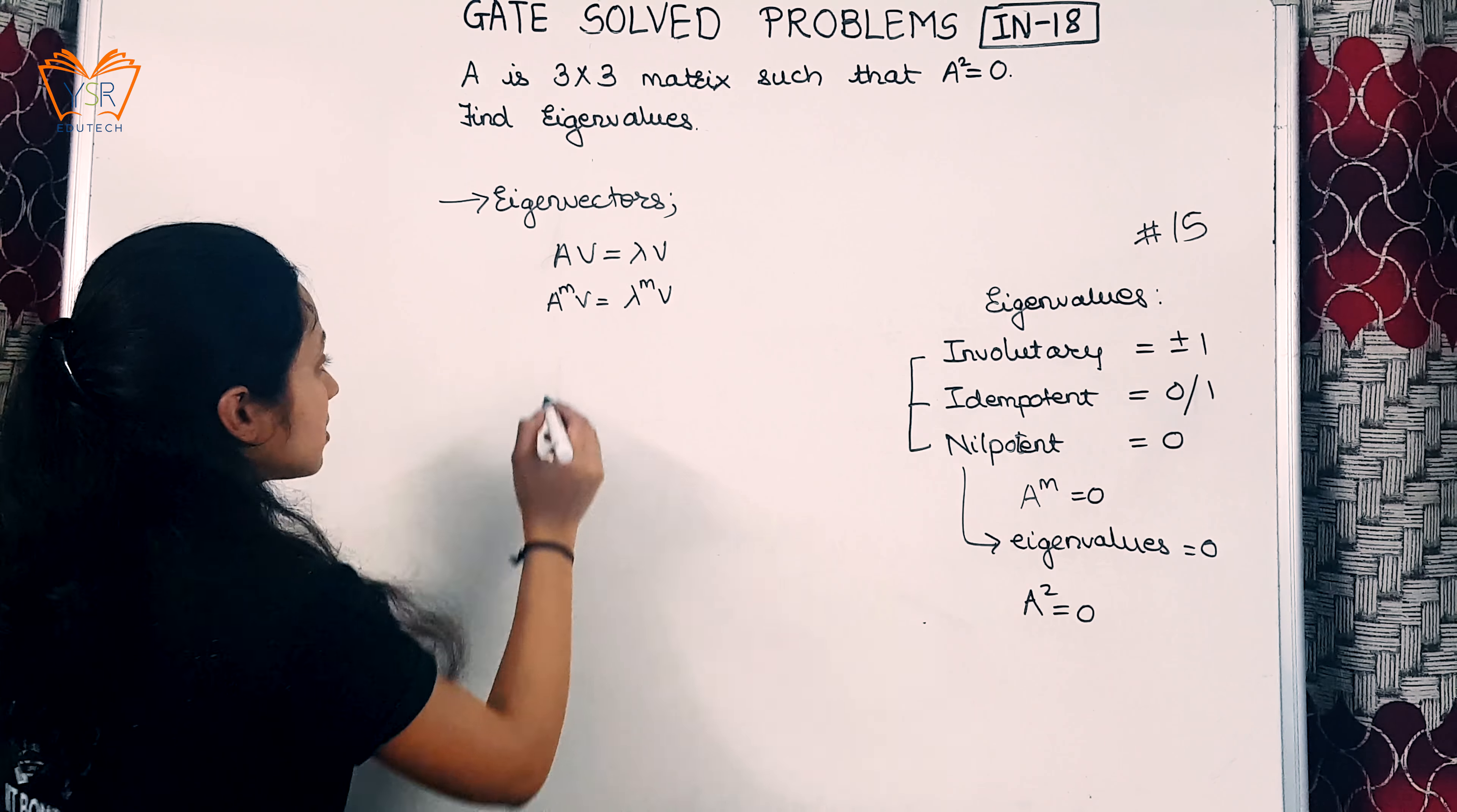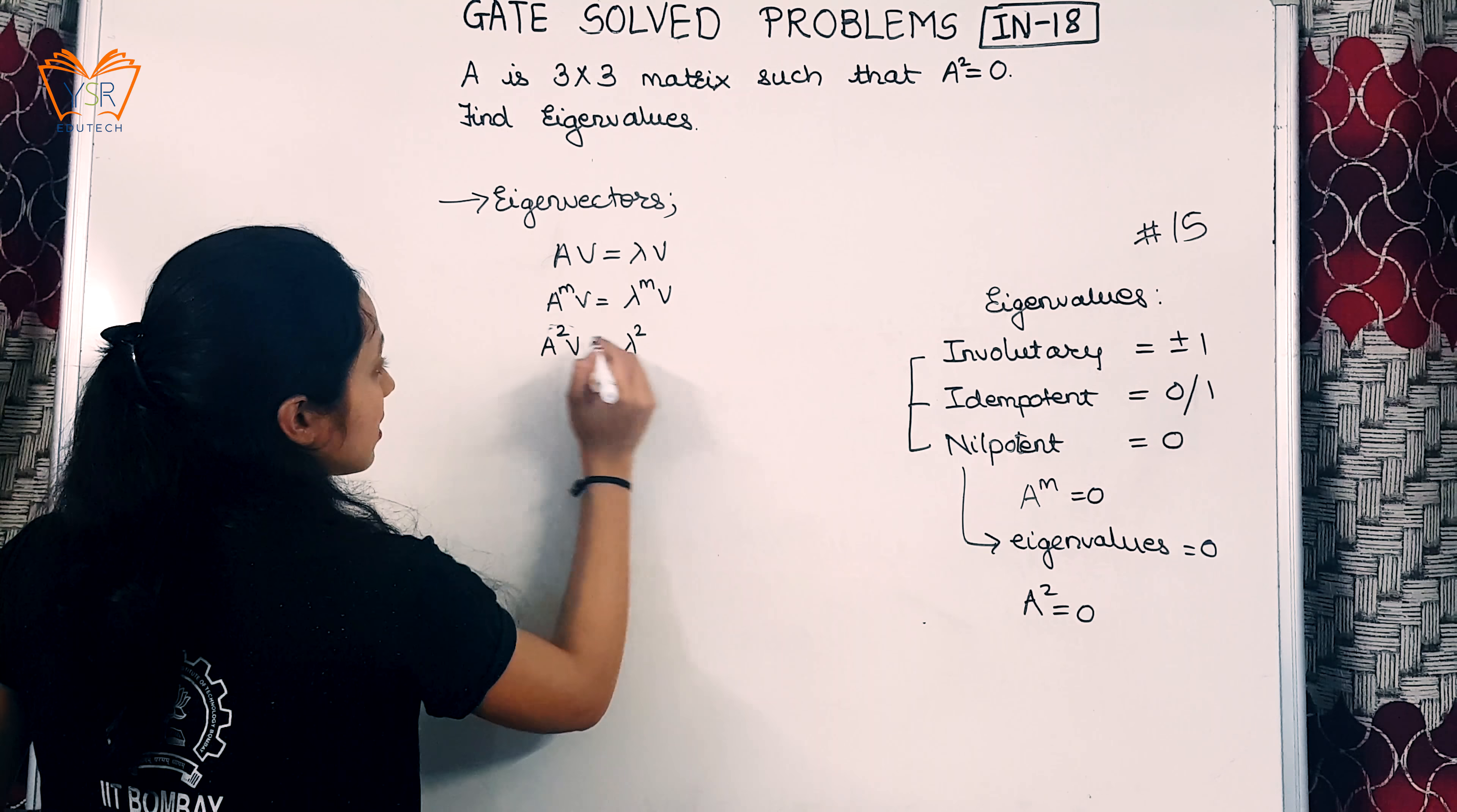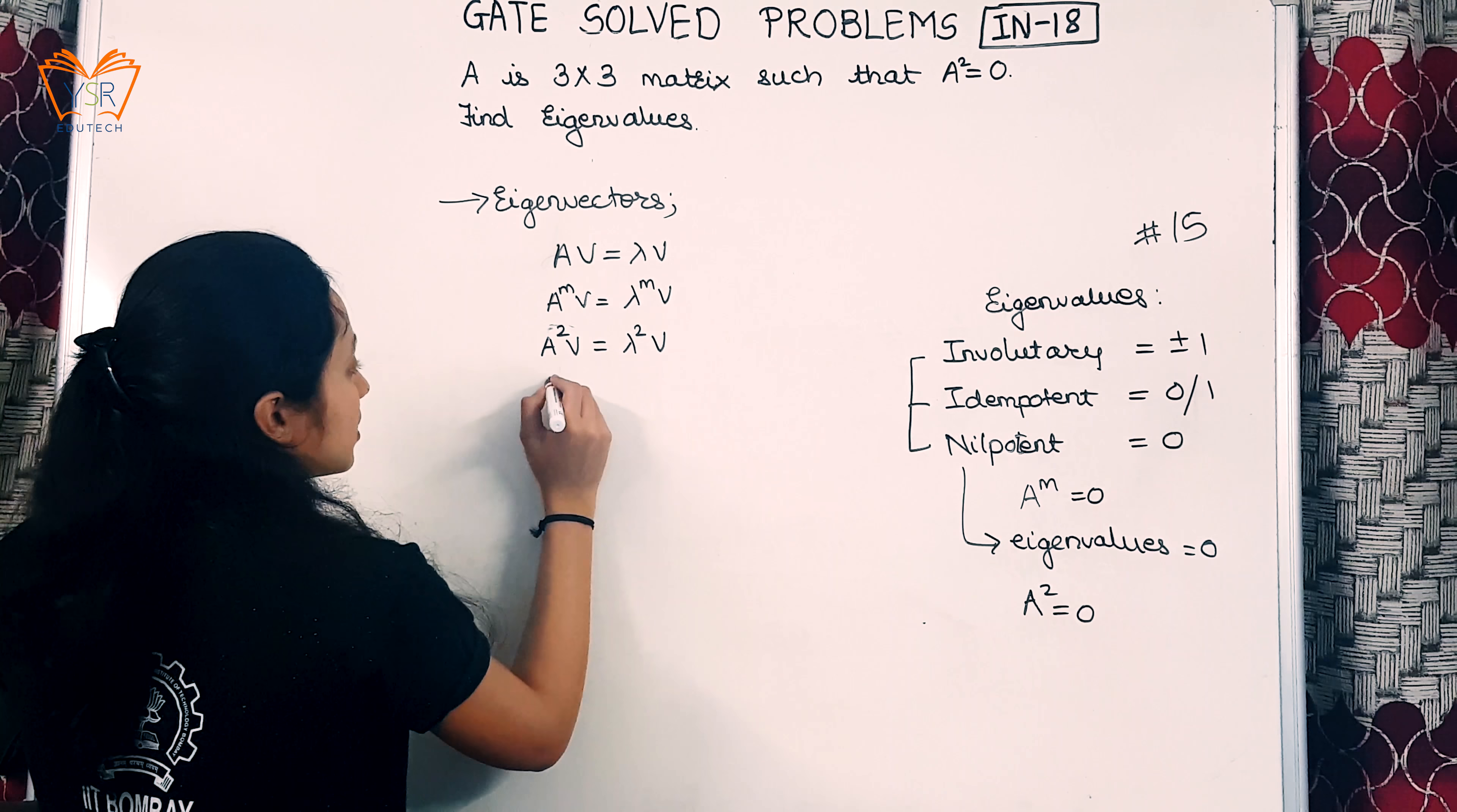In our case, let us square the matrix. As I said, eigenvalues will be squared but eigenvectors will remain the same. Now let us substitute A² = 0 that is mentioned in the question.